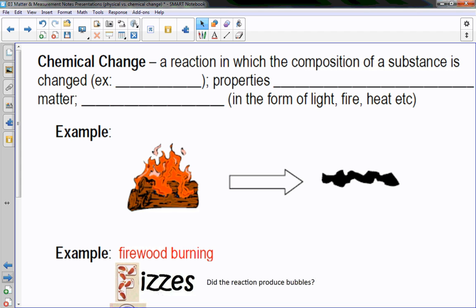Chemical changes result in a composition of the substance is changed. Example, rusting. When the metal oxidizes, when it rusts, it's no longer the metal that we started out with. Properties not the same as the original. Rusty material doesn't conduct electricity as well as good shiny metal. Or, energy is produced in the form of light, fire, heat, etc.